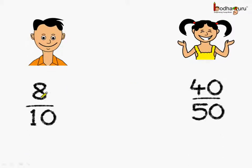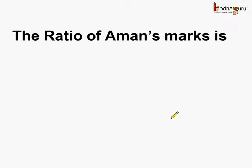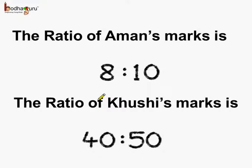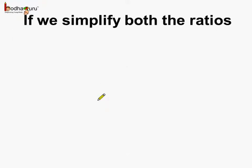Anand got 8 out of 10 in a unit test and Khushi got 40 out of 50 in a half yearly exam. Can we compare the two performances? Yes. For that, what is the ratio of Anand's mark? It is 8 is to 10 as he got 8 marks out of 10 marks. And the ratio of Khushi's marks is equal to 40 is to 50 as she got 40 out of 50 marks.